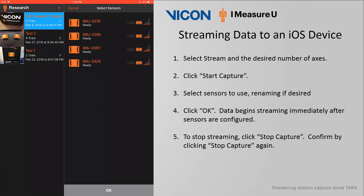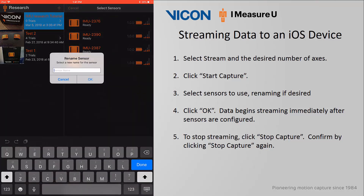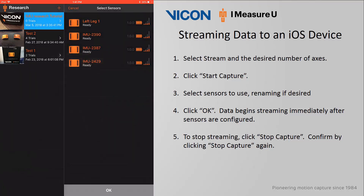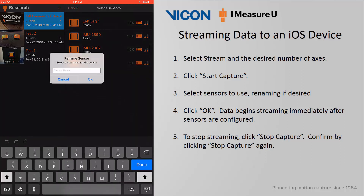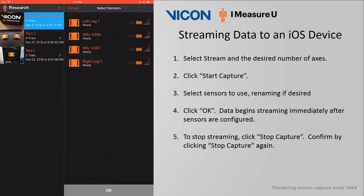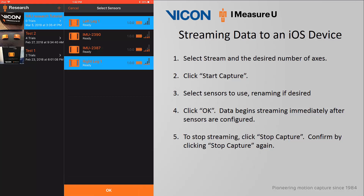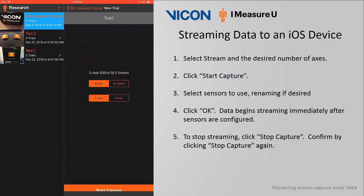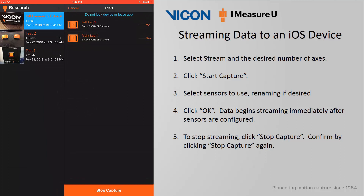When selecting a sensor, you can drag it to the left and rename it to help identify the location of each sensor. I will swipe 2376 to the left and rename it as Left Leg 1, then do the same for 2429 and rename it Right Leg 1. I will select both of them and click OK. Remember, you can choose up to 4 sensors when streaming data. As soon as I click OK, the sensors begin to configure themselves, setting up synchronization. When this process is complete, data begins immediately streaming from all the sensors to the iOS device.